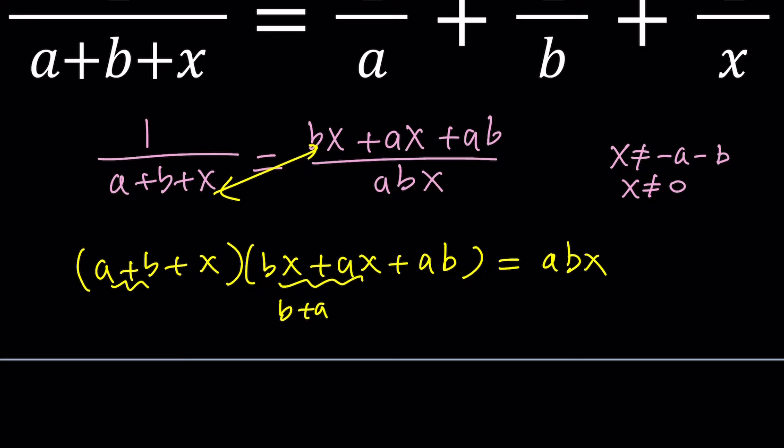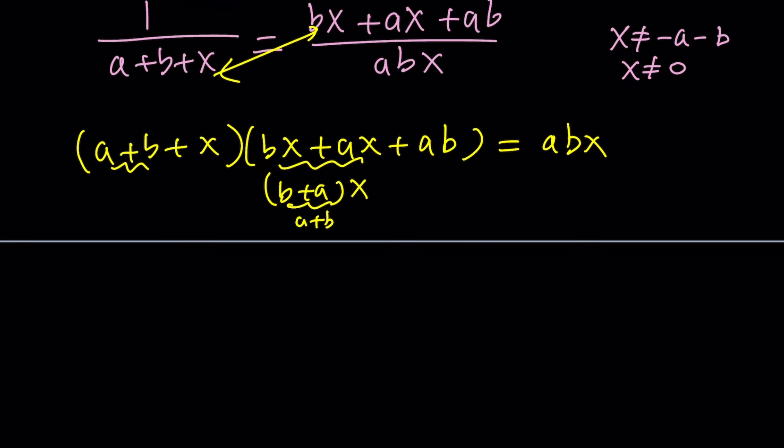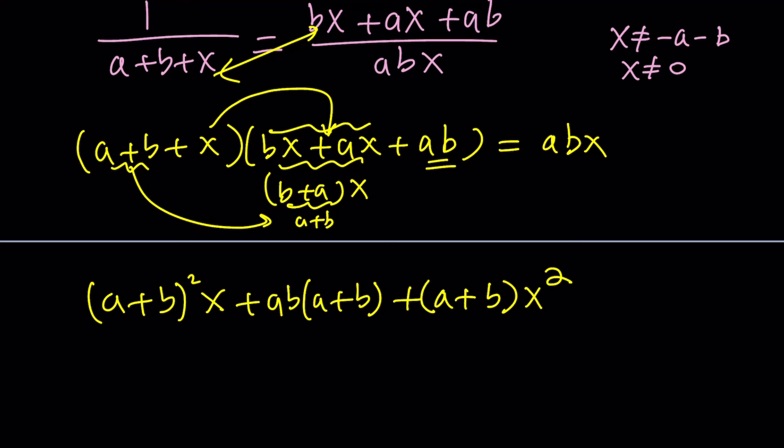This is b plus a times x. So when we multiply a plus b and b plus a, a plus b and b plus a are the same. So you can write it as a plus b squared x. And then we're going to distribute it over the ab. It's going to be ab times a plus b plus, now we're going to multiply x by these two terms. That's going to be x times a plus b times x. So that's going to be a plus b times x squared. That's going to be the quadratic term. And then finally, multiply x by ab. Then you're going to get abx. And of course, this is equal to abx. abx and abx, we can go ahead and cancel them out.